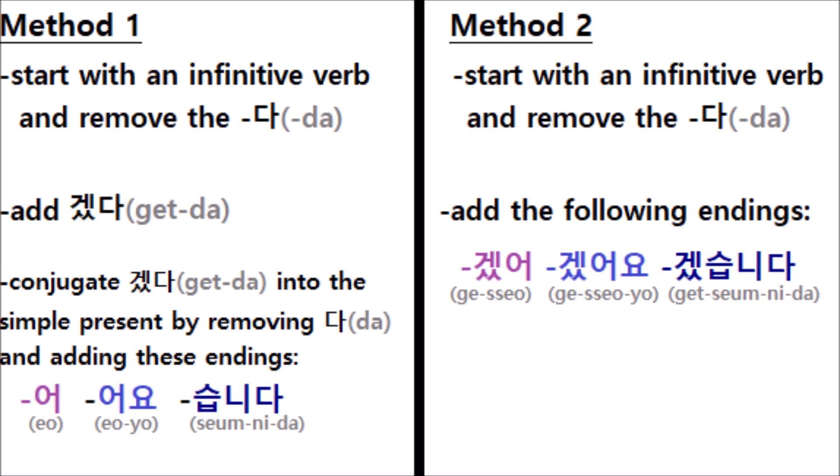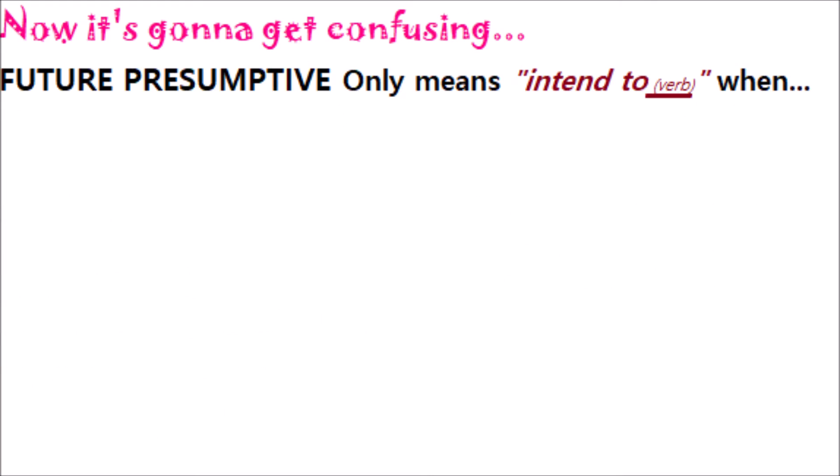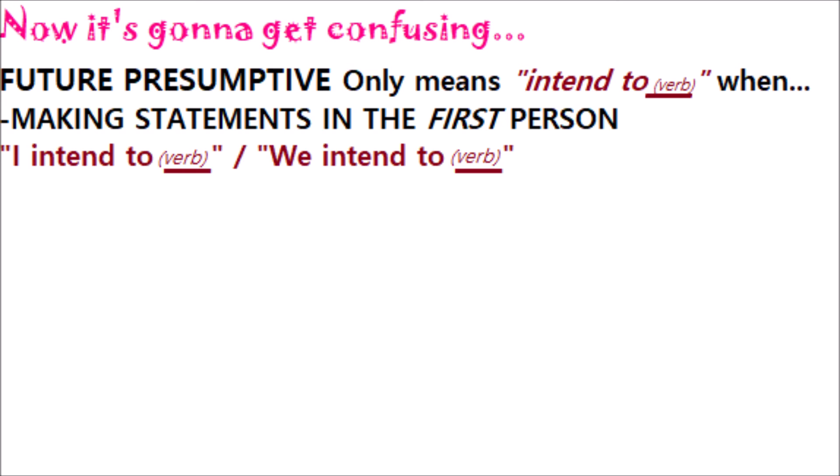Choose whichever method you like — both are equal in difficulty. Now, something important about this verb tense is that it is very limited in how it can be used to state future intent. Since it means 'intend to blank,' you can only use it in the first person to say 'I intend to blank' or 'we intend to blank.'